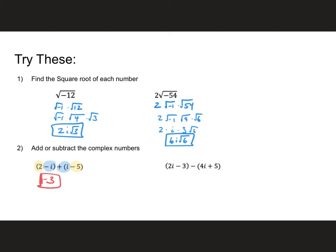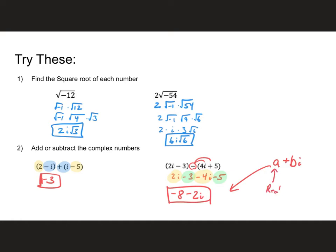For the second problem: 2i minus 3 minus (4i minus 5). I distribute through the negative sign, giving negative 4i minus 5. Don't forget to distribute to both terms. Combining like terms: negative 3 and negative 5 give me negative 8, and 2i minus 4i gives me minus 2i. We typically write answers in the form a plus bi — the real part first, then the imaginary part. This is the standard form of a complex number.